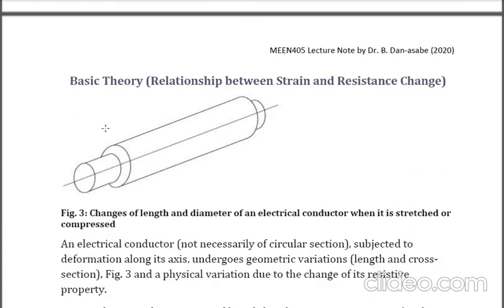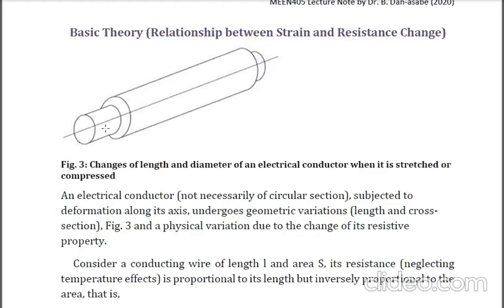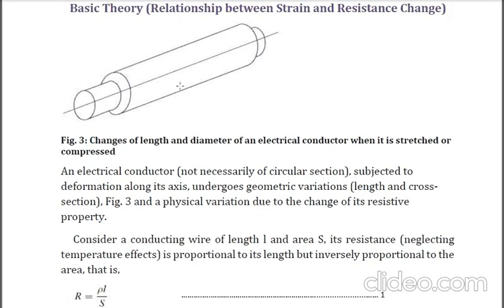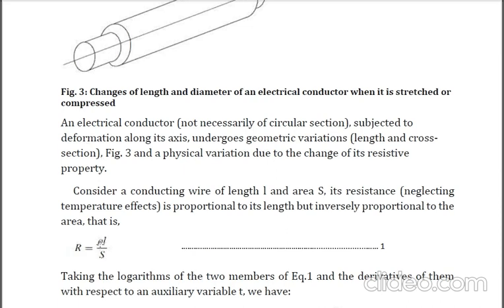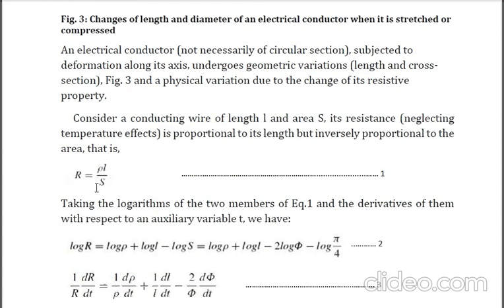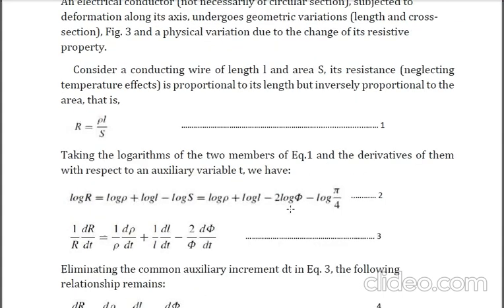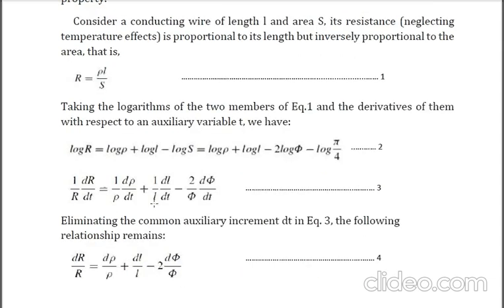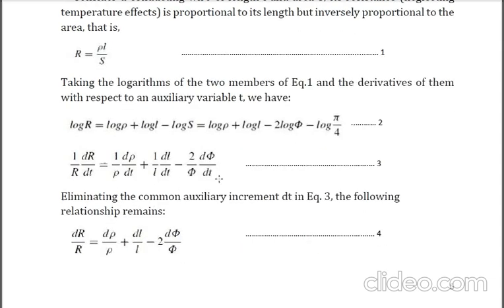The next topic is the basic theory — the principle on which the strain gauge operates. Starting with a conductor that is strained or loaded in tension, equation number one gives the relationship: for an electrical conductor, resistance equals resistivity multiplied by length, all over cross-sectional area S. From equation one, we take logarithms of both sides to get equation two, and then from equation two, we differentiate to obtain equation three.